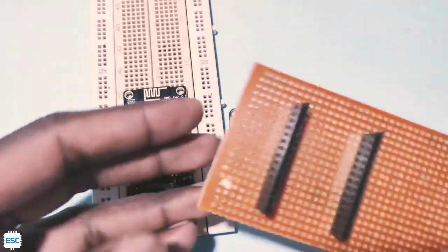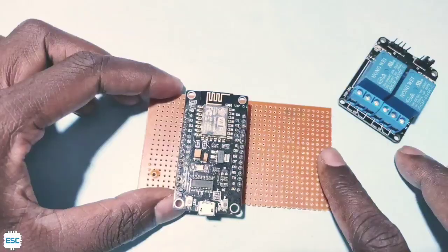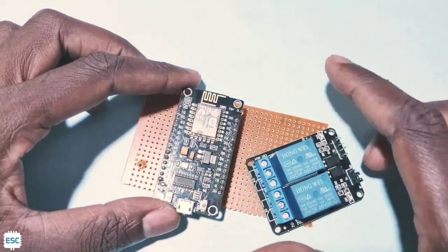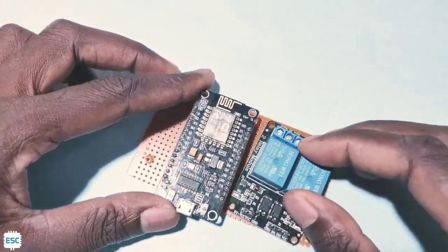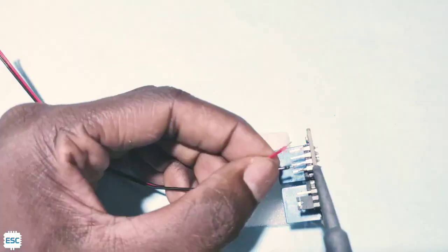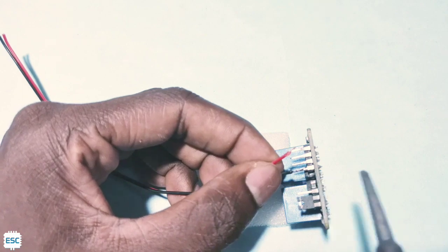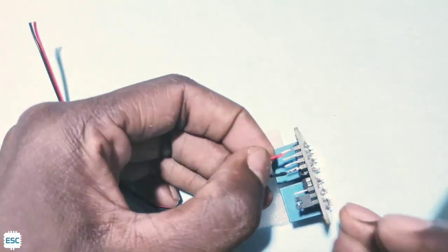Now let's connect a relay module. I'm using 5 volt relay module, it has two channels and I placed that ESP8266 on a perfboard. Now let's connect ESP and relay module. First I soldered two wires for power lines.